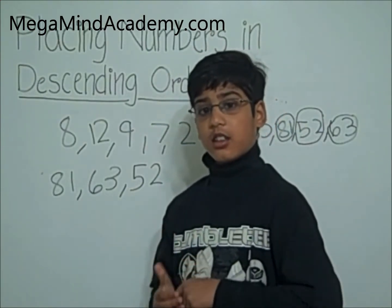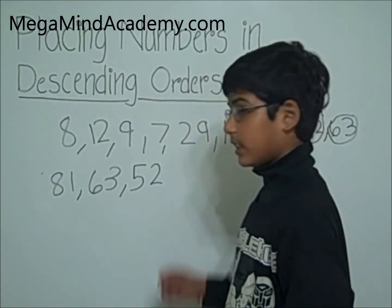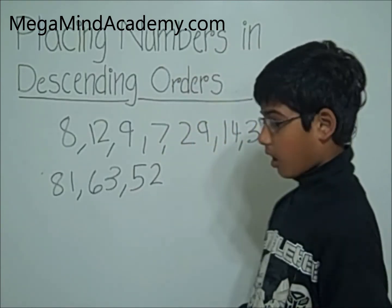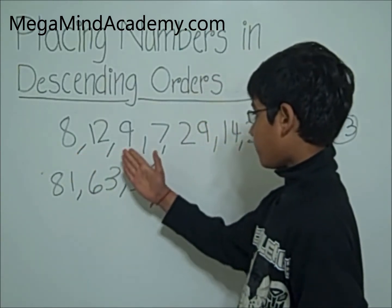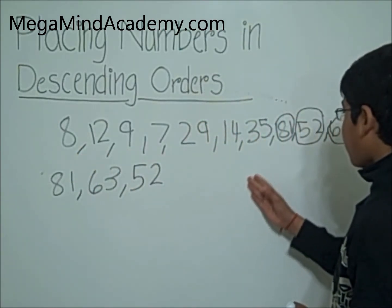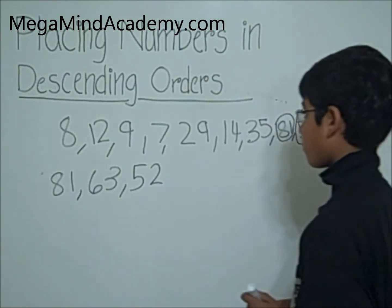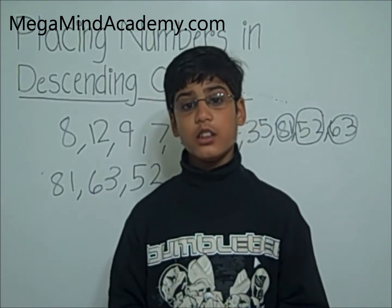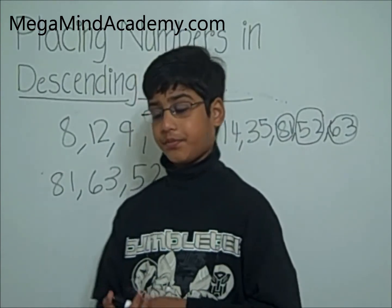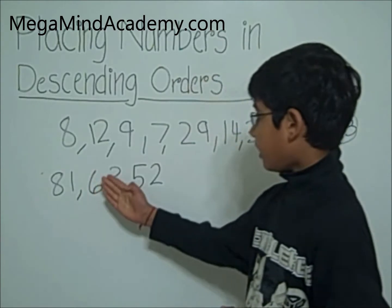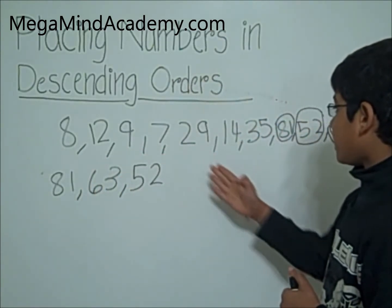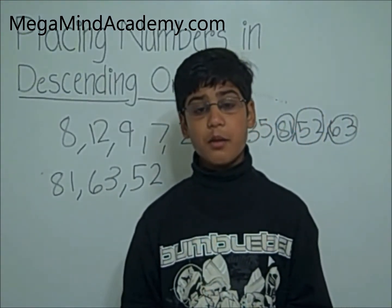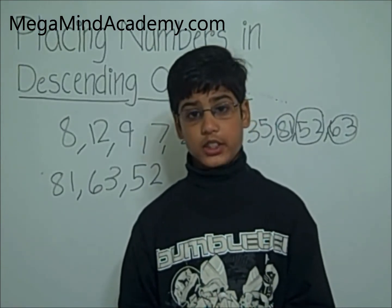Now is there any number closer to 52? Is there any number from 40 to 50? Our numbers are 8, 12, 9, 7, 29, 14, and 35. No, there is no number from 40 to 50. Is there any number from 30 to 40? Yes! We have a number from 30 to 40. It is 35.